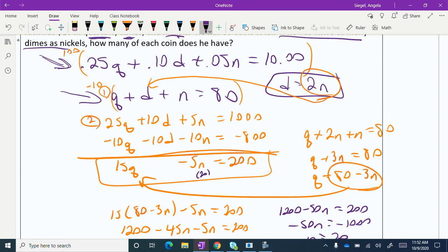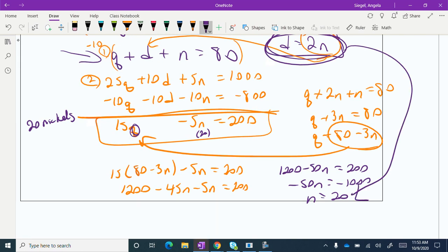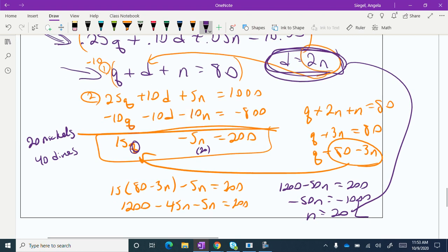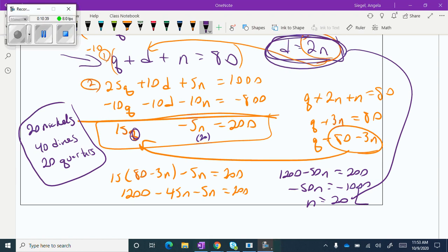If there are 20 nickels, then I can figure out how many quarters there are. Let's see, 20 nickels. I can even make it easier than that. Look at that. So if there are 20 nickels, then there's 40 dimes. And I know that there are 80 total. So then there's going to be 20 quarters. Again, the name of the game is just to keep it easy on yourself. And we are done.